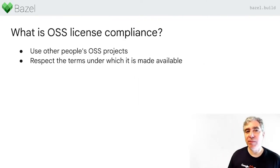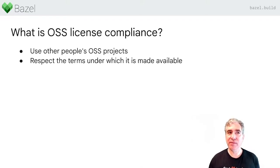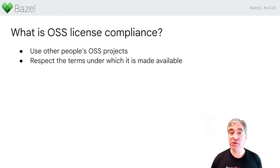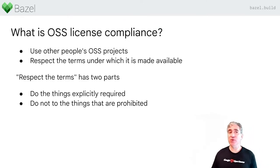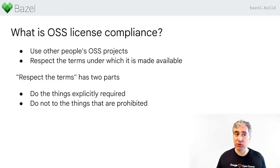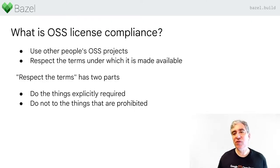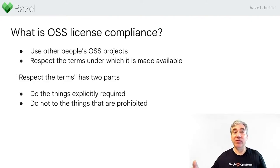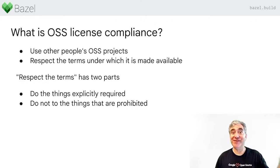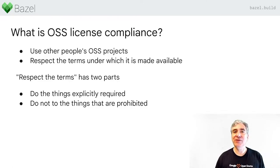We can start by thinking about what OSS license compliance really is, and it's straightforward. I want to use other people's code and I want to respect the terms under which it's made available. Respecting the terms has two parts: do the things that are explicitly required, and don't do the things that are prohibited. The things that are required are usually easy to think about because they're often spelled out — for notice-style licenses, you must provide a copy of the license text and copyright with your product. If you have a license you pay for by seat, it's spelled out in the license.